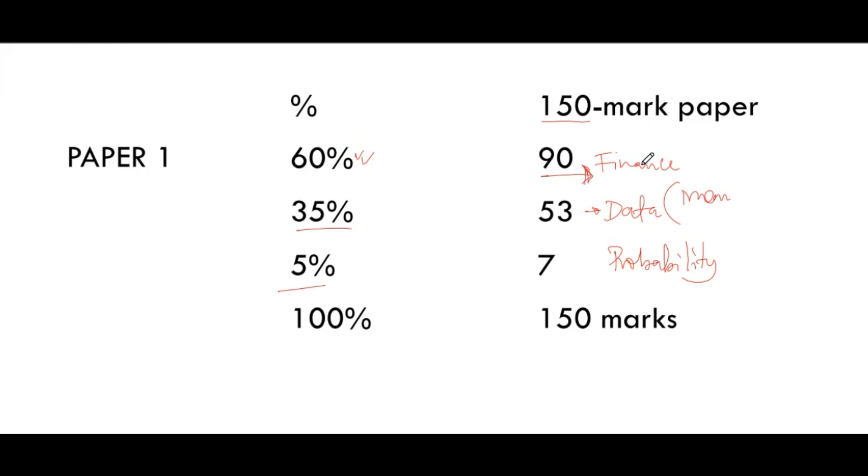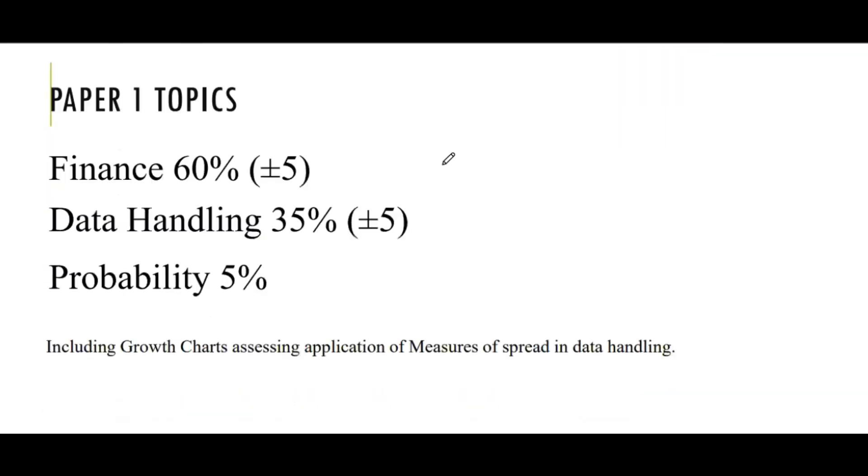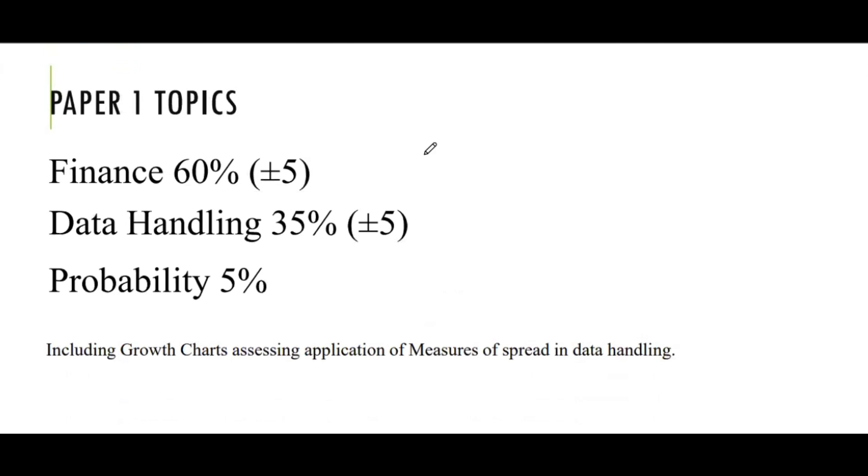Finance, whereby we look at taxation, break event point, production cost, everything to do with that. It's under finance, that you are a pension. As I said, we have people one topics, which is finance, which will go to be 60%, plus or minus five. All right, plus or minus five, which is simply means might be 65 or 60 or 55%. But the largest number, the largest mark has to come from finance.